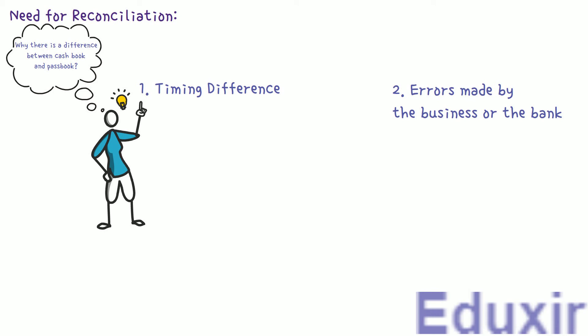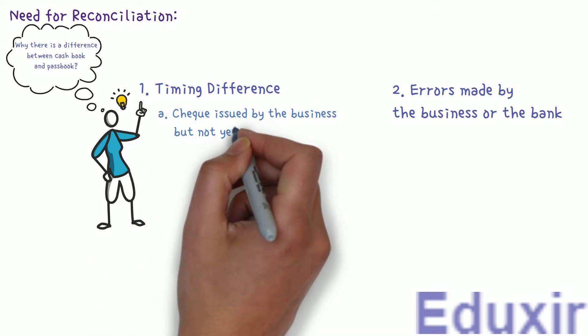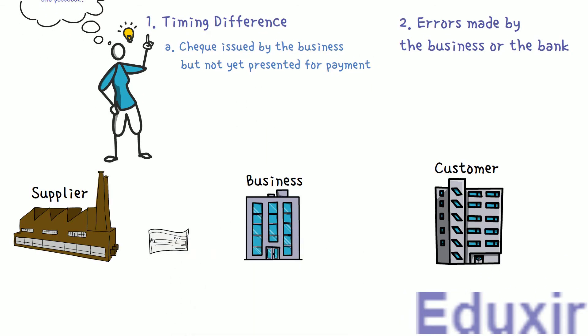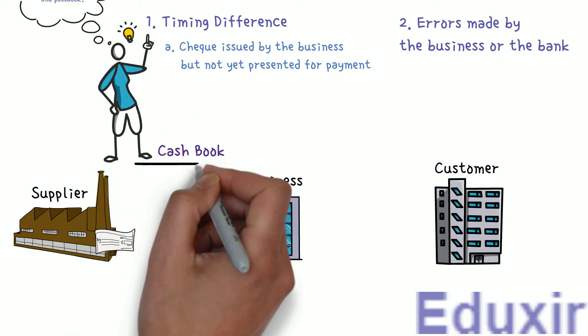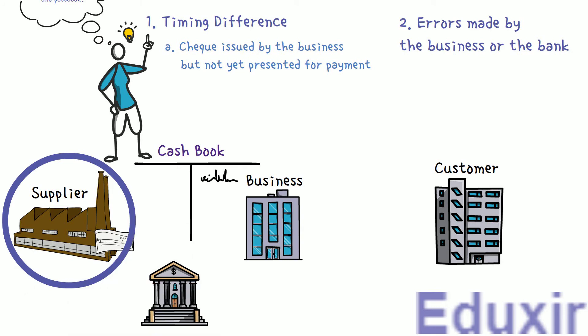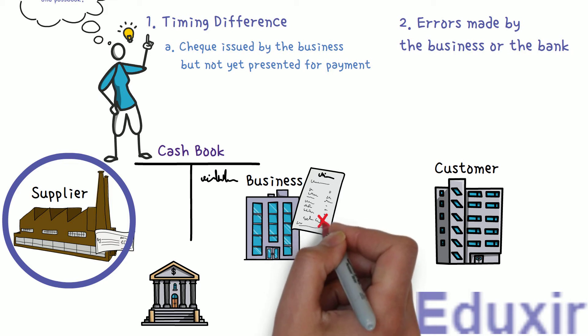One reason for timing difference is checks issued by the business but not yet presented for payment. When the business issues a check to the supplier or creditor, it is immediately entered on the credit side of the cashbook. The supplier or creditor has to encash this check by presenting it to the bank. In some cases, they may not present this check immediately, so when the bank statement is received, this check will not be reflected in it.